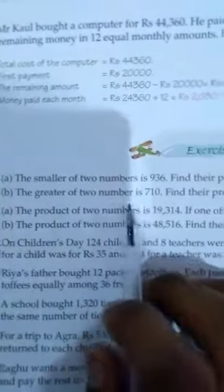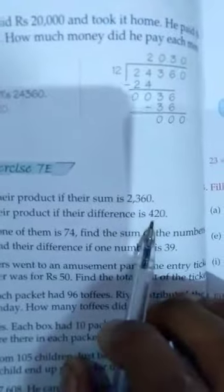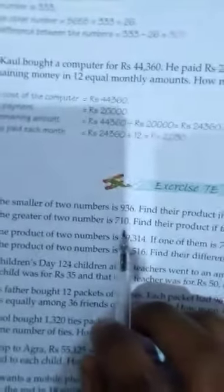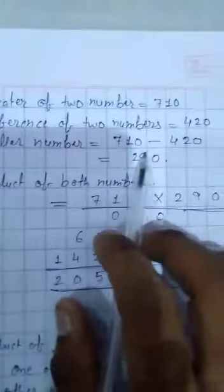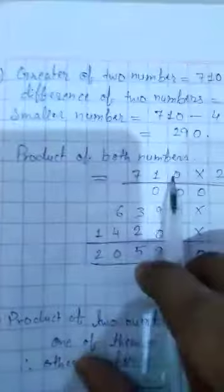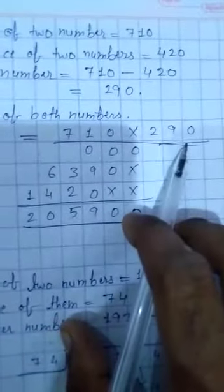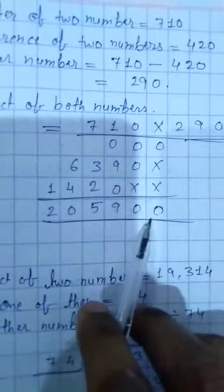Question B: the greater of two numbers is 710. The greater number is 710 and we need to find the product given their difference is 420. First we find the smaller number. In the notebook: greater of two numbers equals 710, difference of two numbers equals 420. Smaller number equals 710 minus 420, which is 290. Product of both numbers equals 710 multiplied by 290, which is 2,05,900. This is the answer.